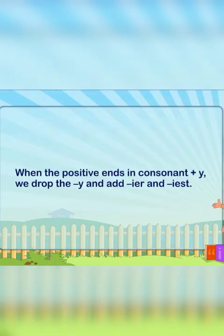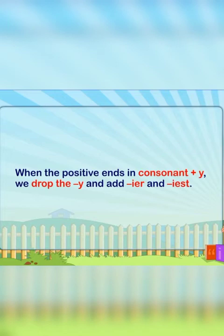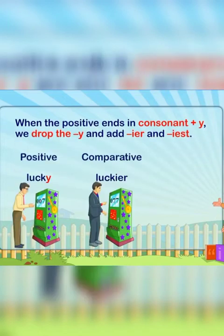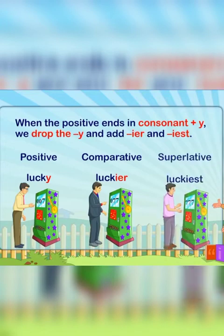When the positive ends in a consonant plus -y, we drop the -y and add -ier and -iest. For example: lucky, luckier, luckiest.